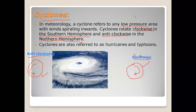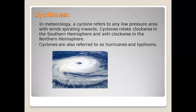I have explained in a previous lecture what the northern hemisphere and southern hemisphere are. Cyclones are also referred to as typhoons and hurricanes. When a cyclone is a large rotating storm with high speed winds that forms over warm water, it is called a hurricane or tropical cyclone.